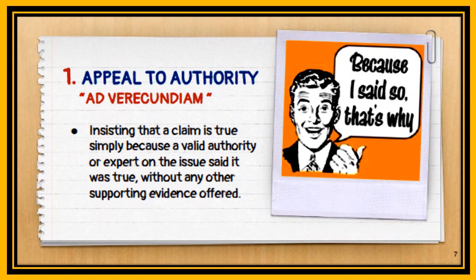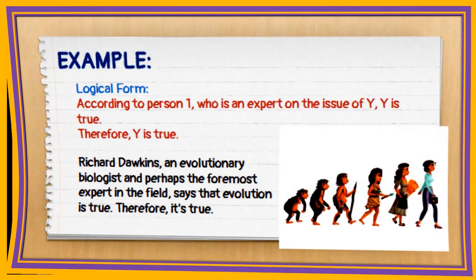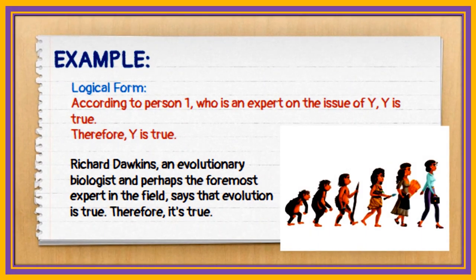The first is the appeal to authority, or ad verecundiam. This occurs when a person insists that a claim is true simply because a valid authority or expert on the issue said it was true, without any verification or other supporting evidence offered. The logical form is: Person 1, who is an expert on issue Y, said that Y is true, therefore Y is true.